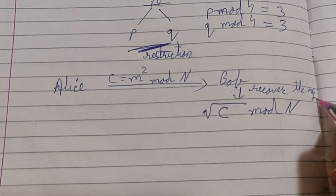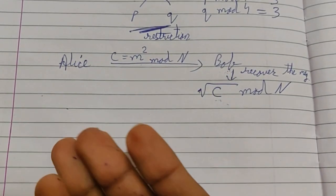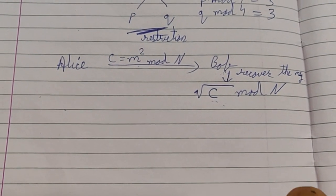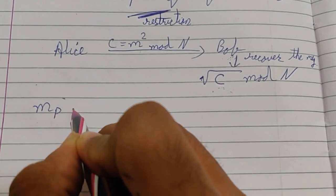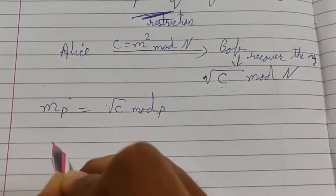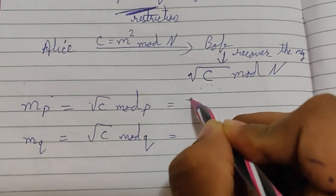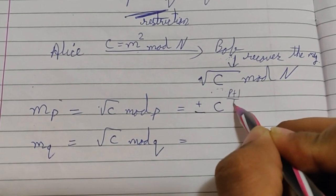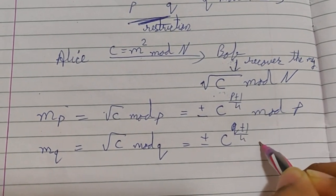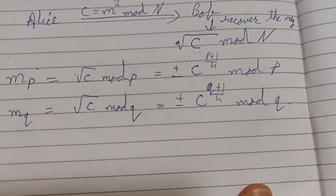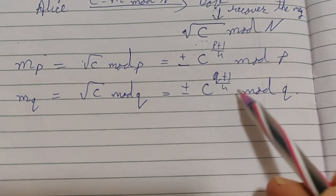To speed up the decryption calculation of √C mod N, we compute mp = ±C^((p+1)/4) mod p and mq = ±C^((q+1)/4) mod q. This gives two values from each — plus or minus — resulting in four total combinations.